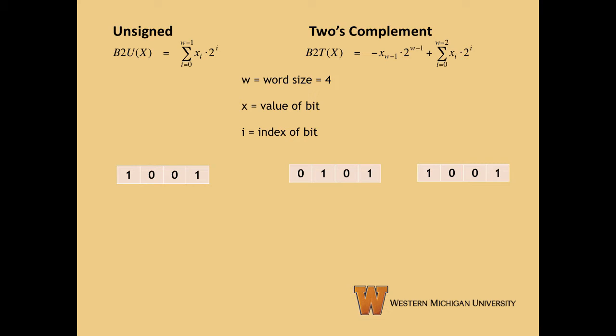This function, B2U of x, shows us how to convert bits into an unsigned integer, and B2T of x shows us how to convert bits into a two's complement integer. In the functions shown above, w means the word size, the lowercase x stands for the value of a bit, the i's indicate the index of the bit, and the capital X represents the whole bit string. Each of the three bit strings we'll look at will have a word size of four.